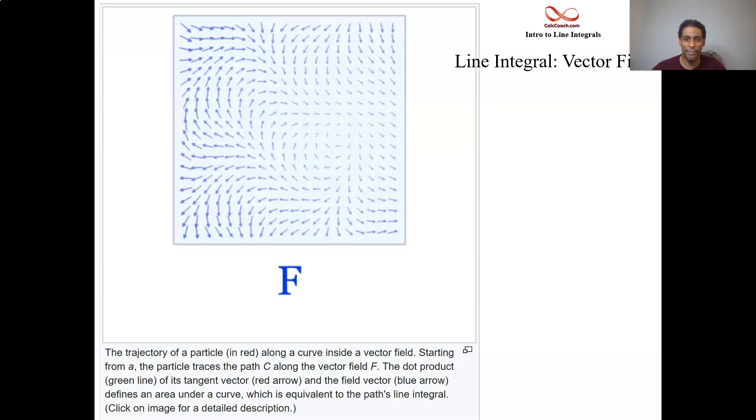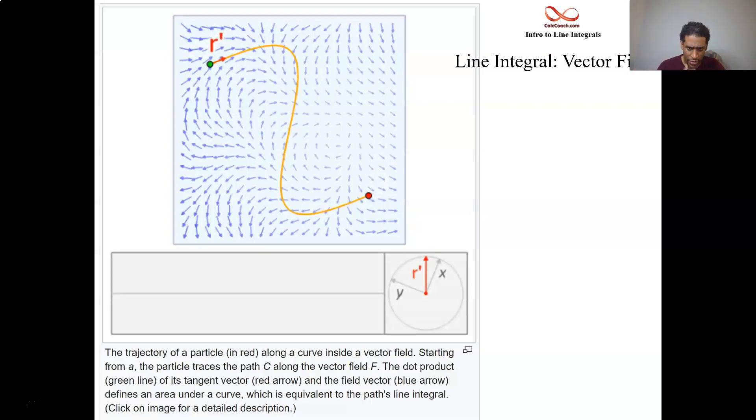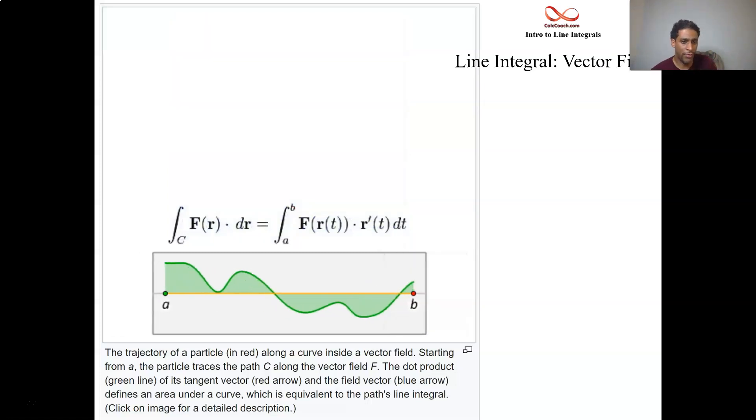So we have a vector field, we have a curve, we have the red vector representing the derivative curve. The blue vector is going to represent the vector field, and we are doing dot products. The green value is the dot product, and it could be negative. It's all about the angle that you're making with the tangent vector.